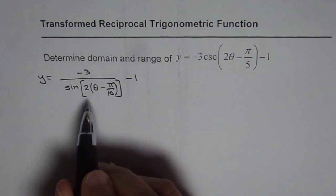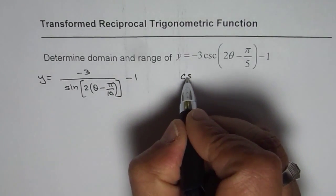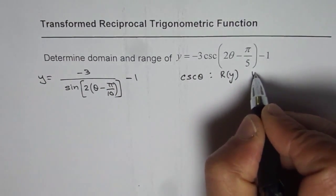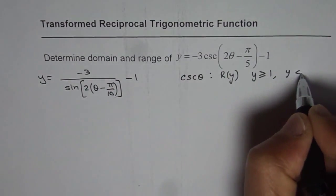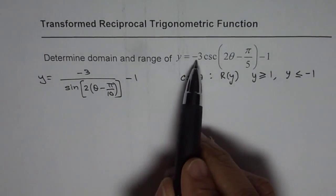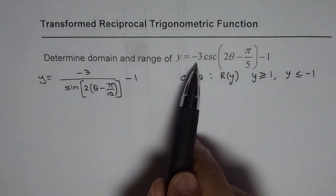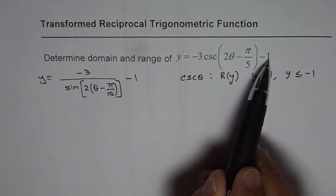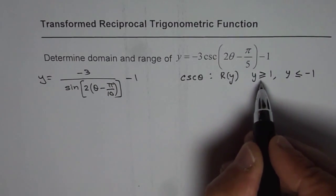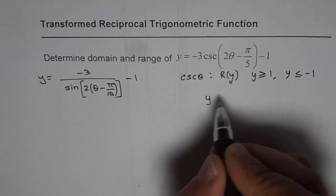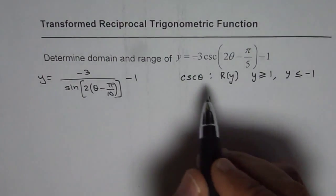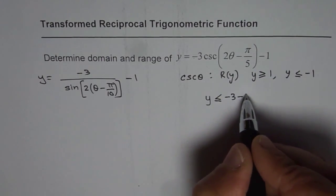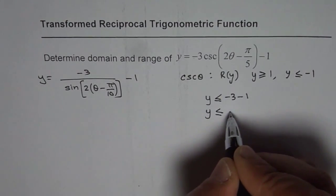As far as the range is concerned, we know for cosecant θ the range is y ≥ 1 or y ≤ −1. In this case we see the transformation where y values get multiplied by minus 3 and then we subtract 1. So these values get modified. When we multiply by minus 3 we have to change the sign, giving y ≤ −3 × 1 − 1, which is y ≤ −4.